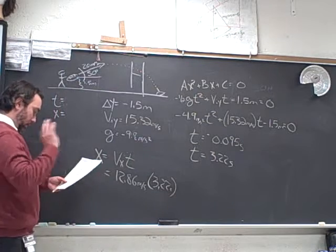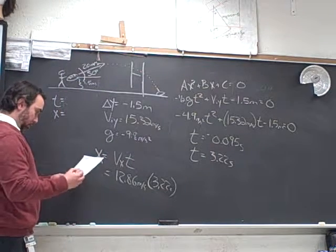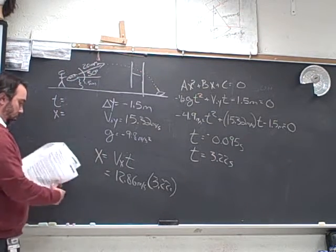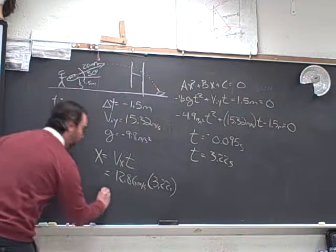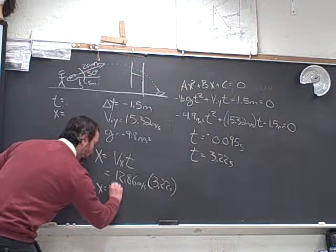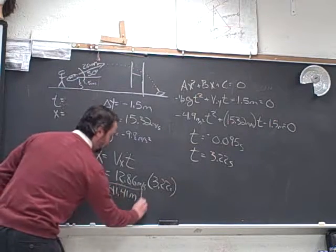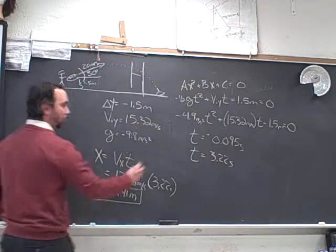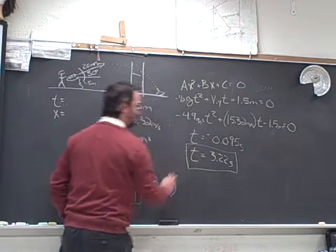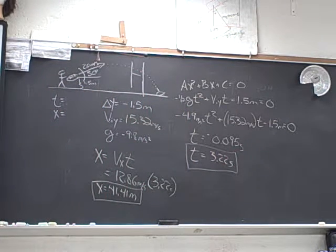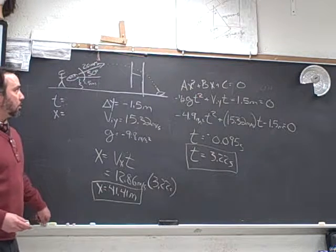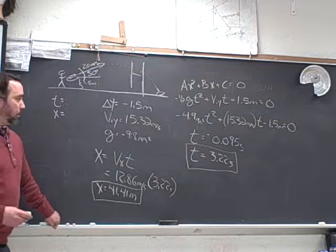So the displacement down field turns out to be 41.41 meters. So this is how far it went. This is how long it took to get there. Now the last question is, when it interacted with the field goal, was it over or under the bar?